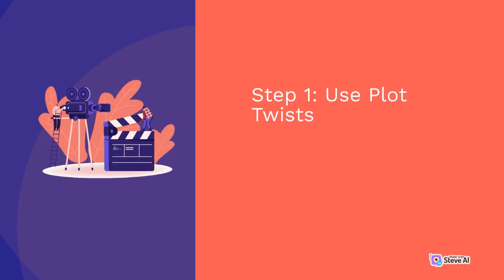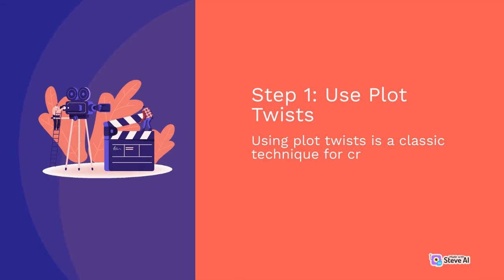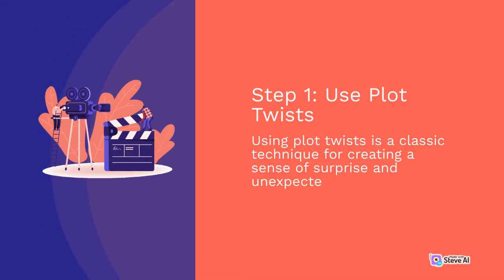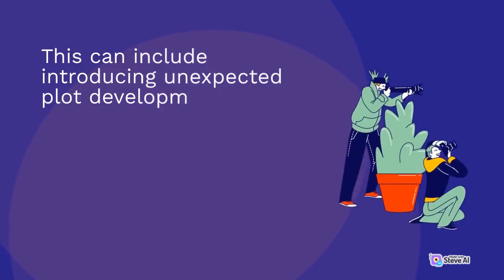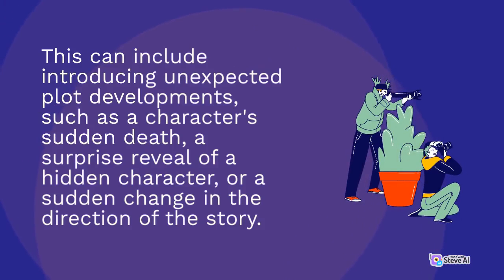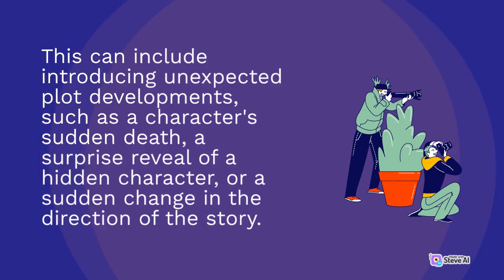Step 1 – Use Plot Twists. Using plot twists is a classic technique for creating a sense of surprise and unexpectedness in a film. This can include introducing unexpected plot developments, such as a character's sudden death, a surprise reveal of a hidden character, or a sudden change in the direction of the story.